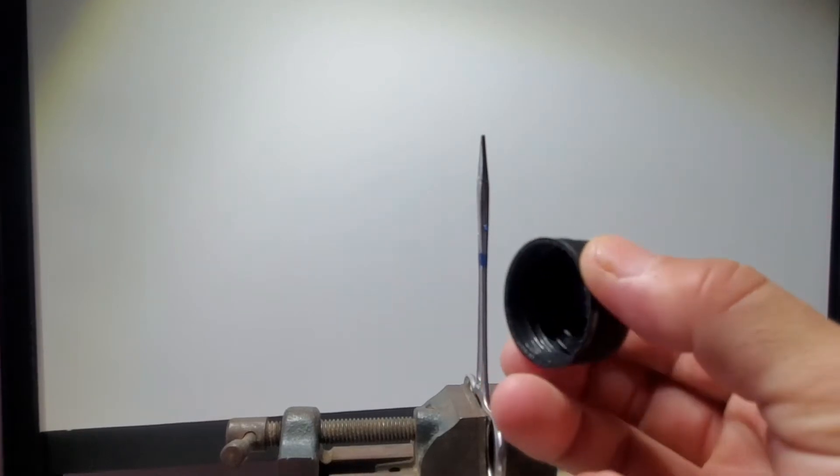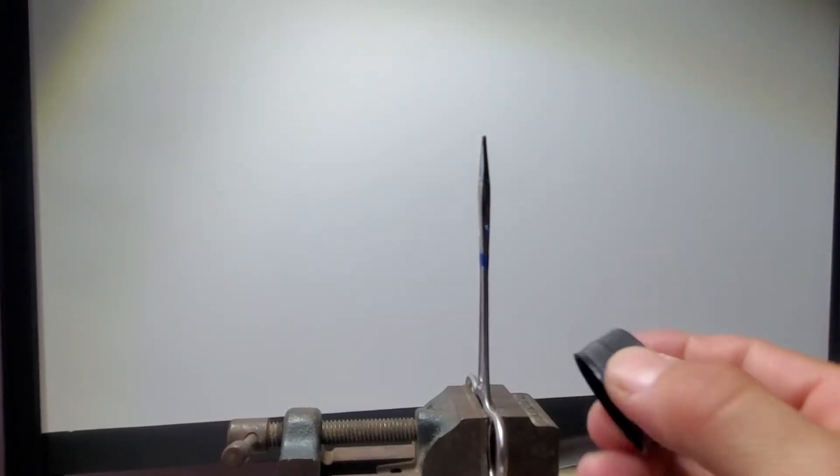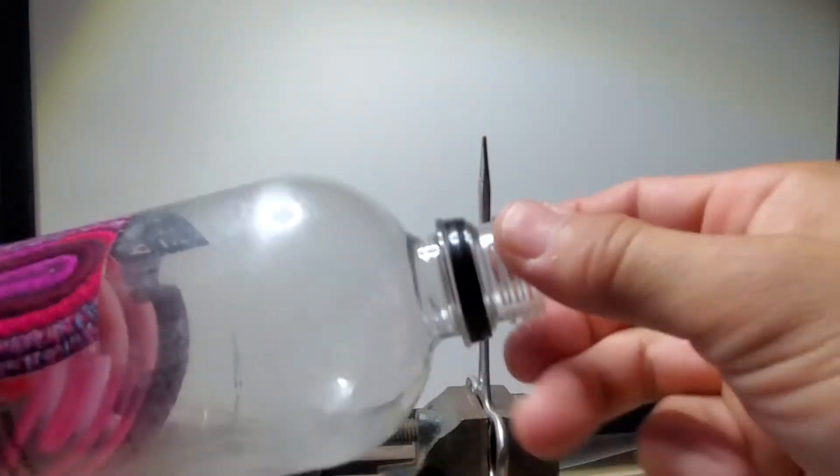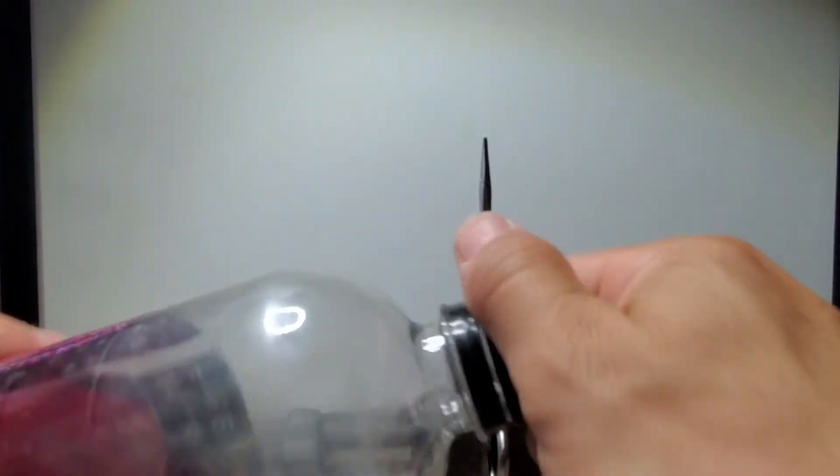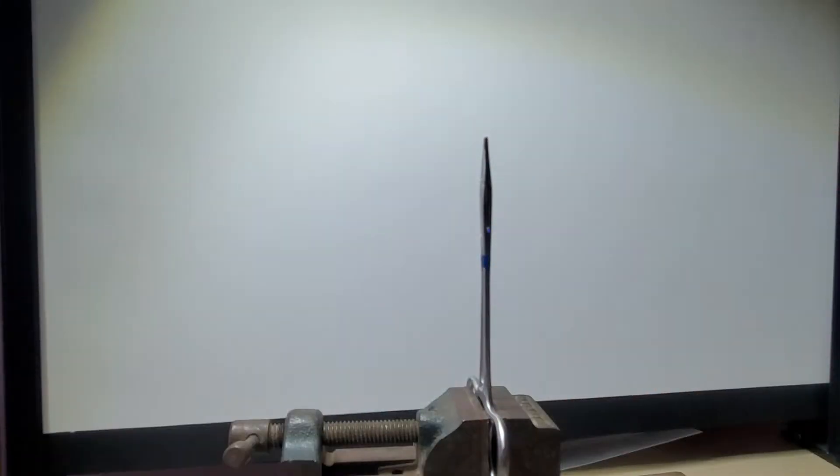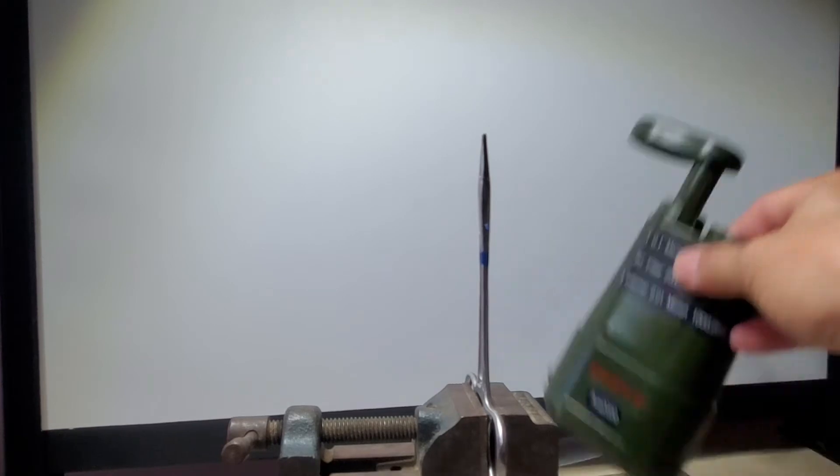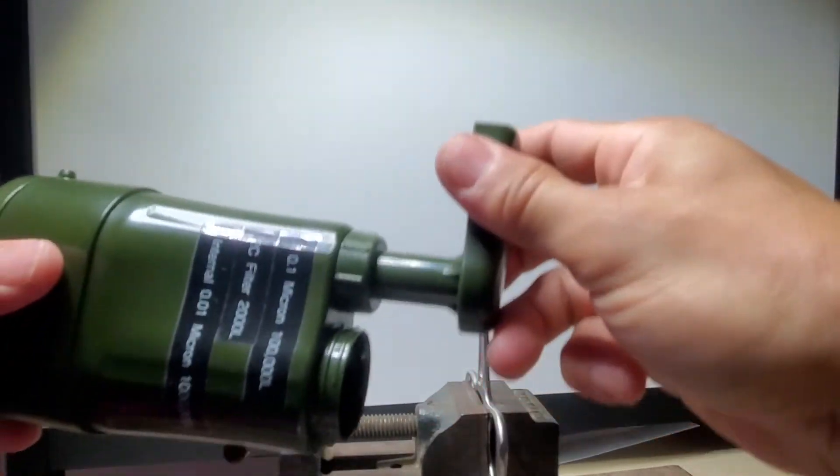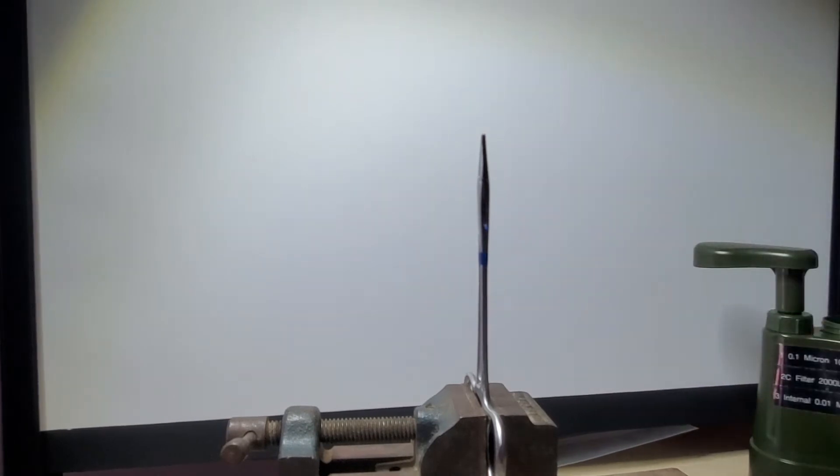So today we're just going to adapt one of these regular pet caps to one of these water bottles, so that way you can filter and not have to try to hold the hose and try to keep it there while you're pumping, because a lot of pumps use a pump handle where you have to physically pump and sometimes it requires two hands.